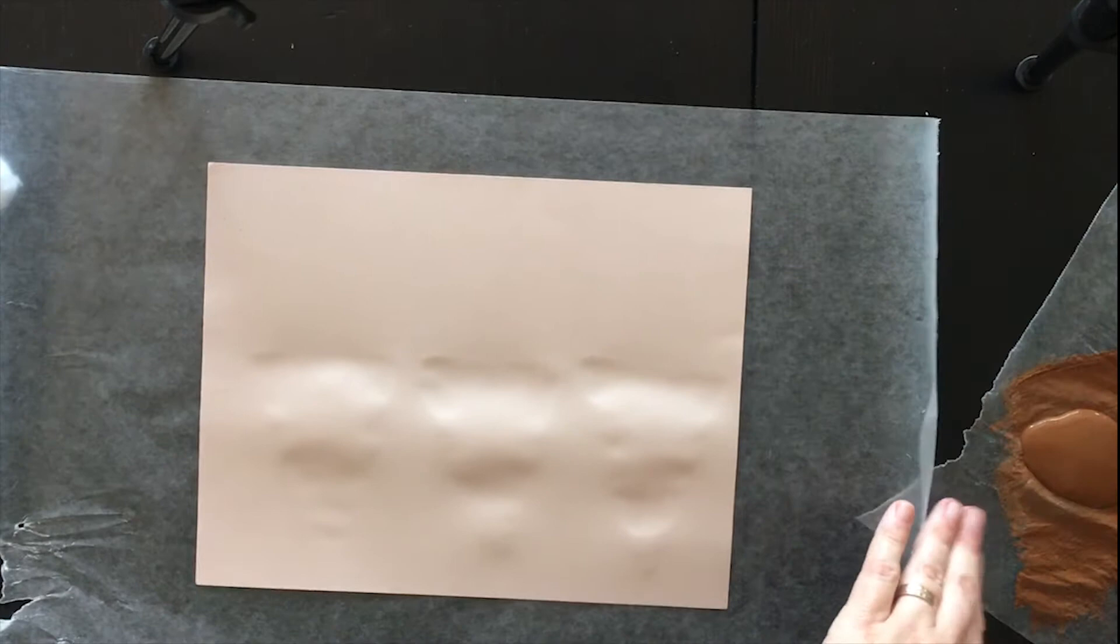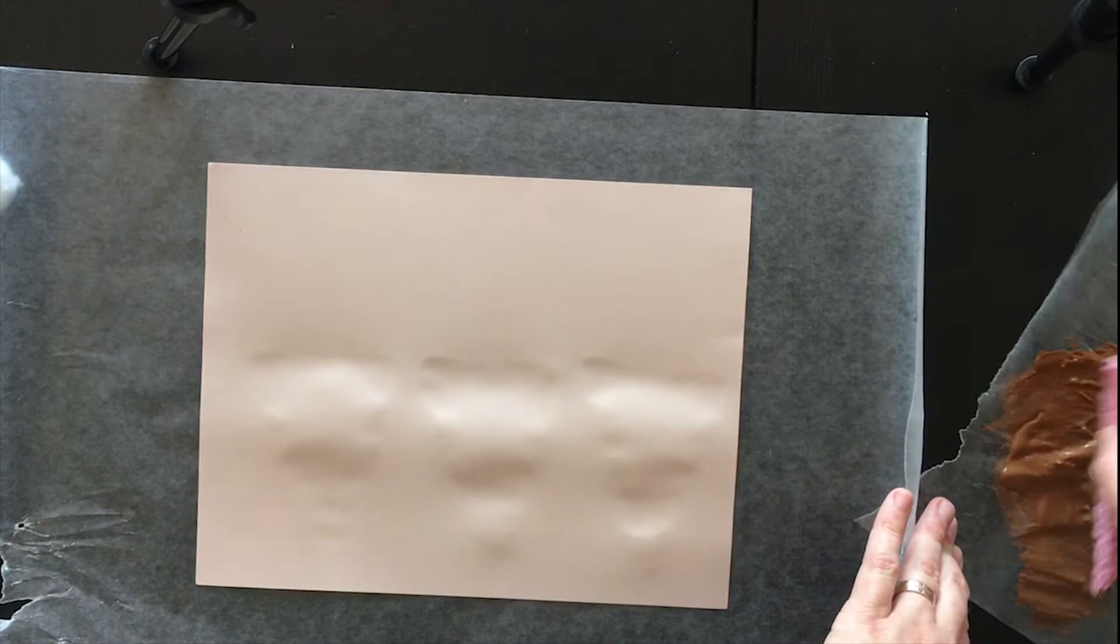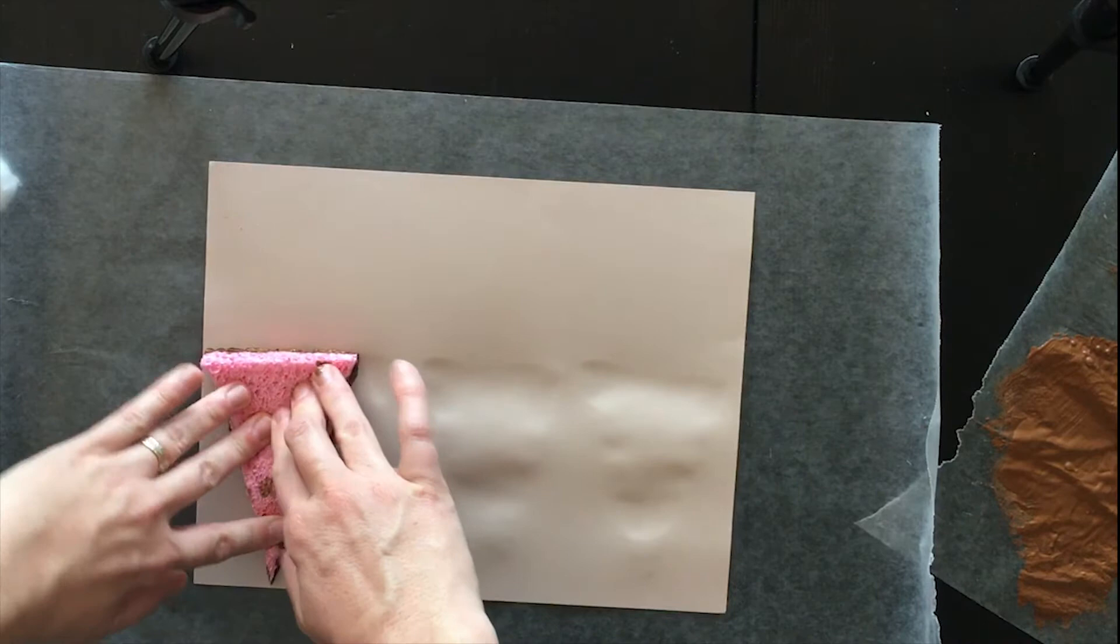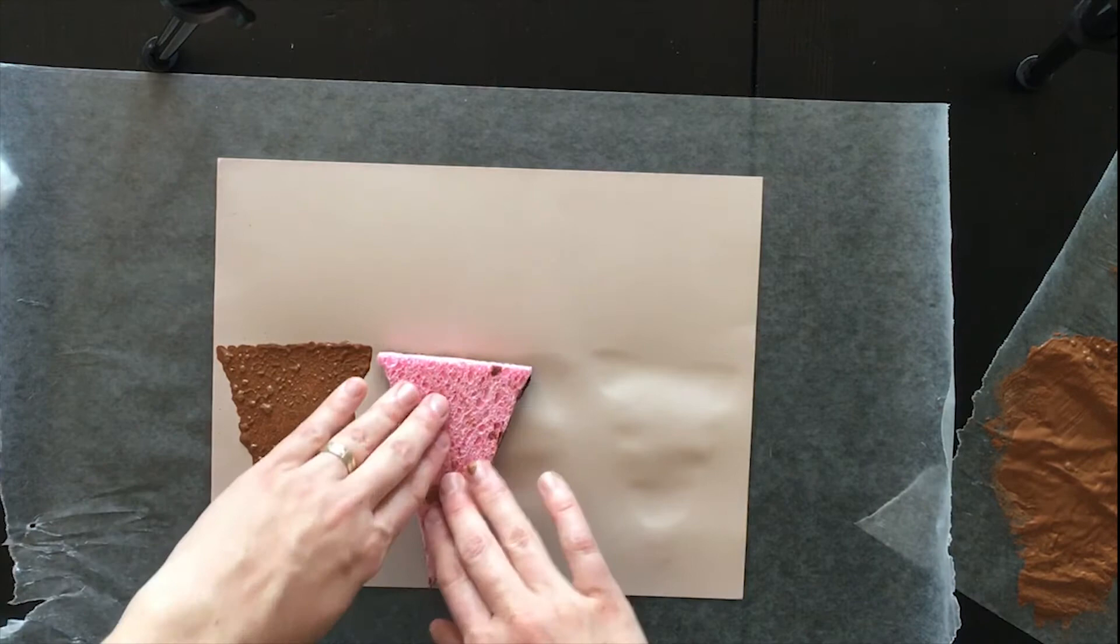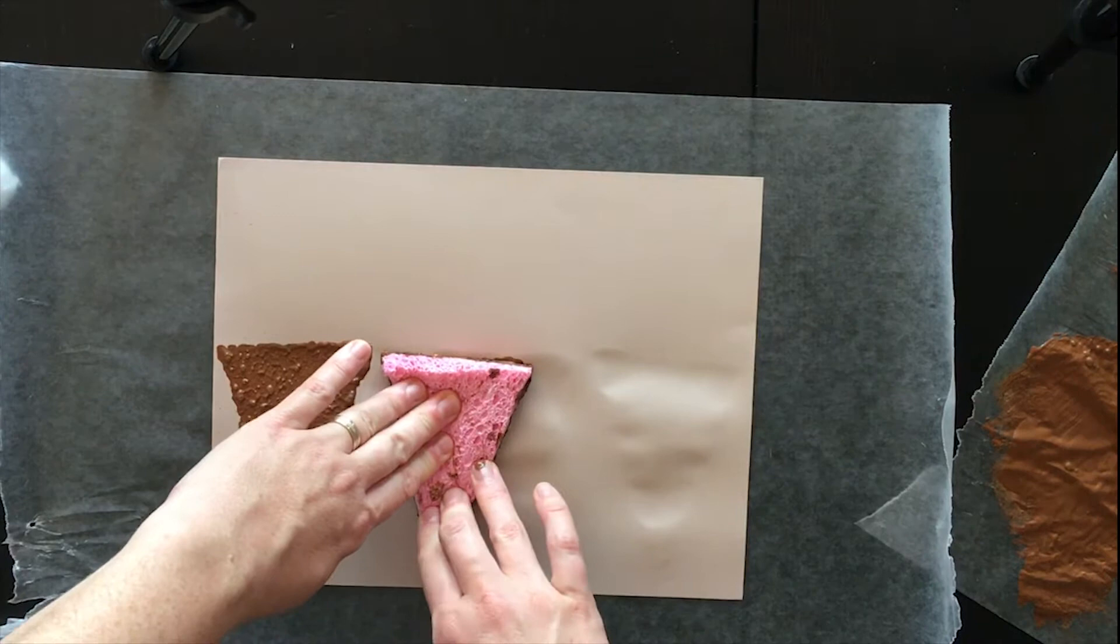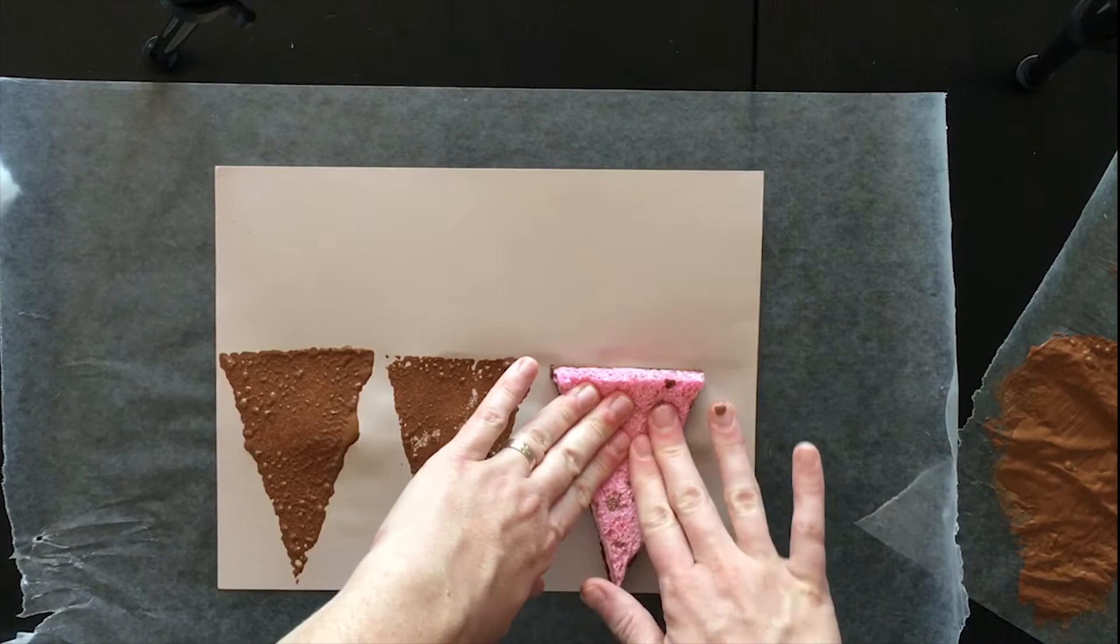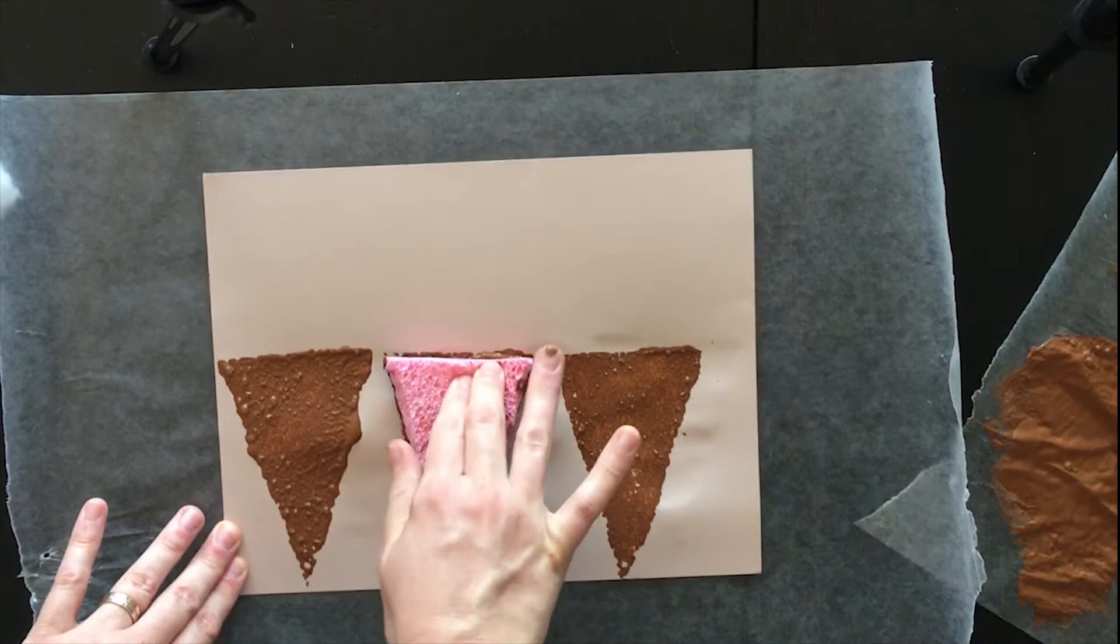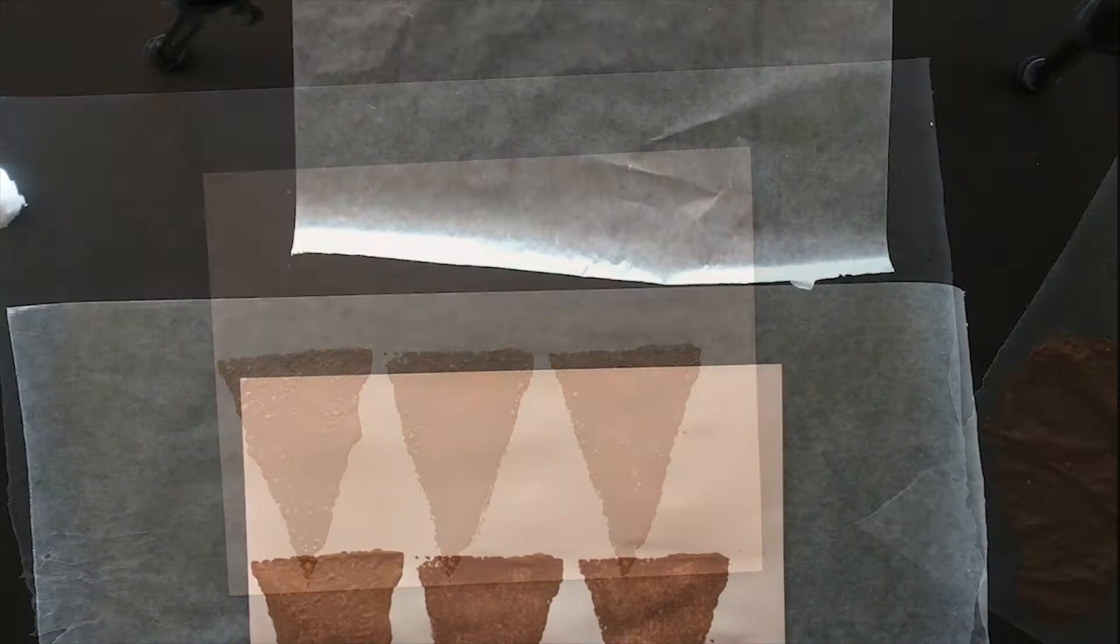The first step is you're going to squirt a bunch of paint out and dip your sponge in there and get it coated really well. And then you're going to just stamp out your ice cream cones. Wherever you want it on your paper, push down to make sure you get the whole thing covered. So once you have your cones on there and they're stamped out the way you want them, then you are going to leave this to dry before we move on to the next part.